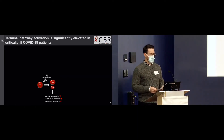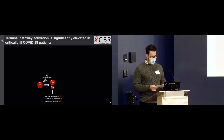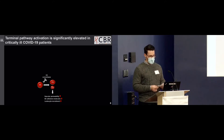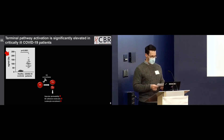Activation of the terminal pathway yields soluble cleavage products that can be used to estimate the degree of activation in the blood. C5A circulates freely until it binds its receptors, two of which are found on endothelial cells, and these events trigger inflammatory and adhesive changes to the endothelium. When we assayed C5A in the serum of COVID-19 patients, we saw a nine-fold median increase compared to healthy controls.